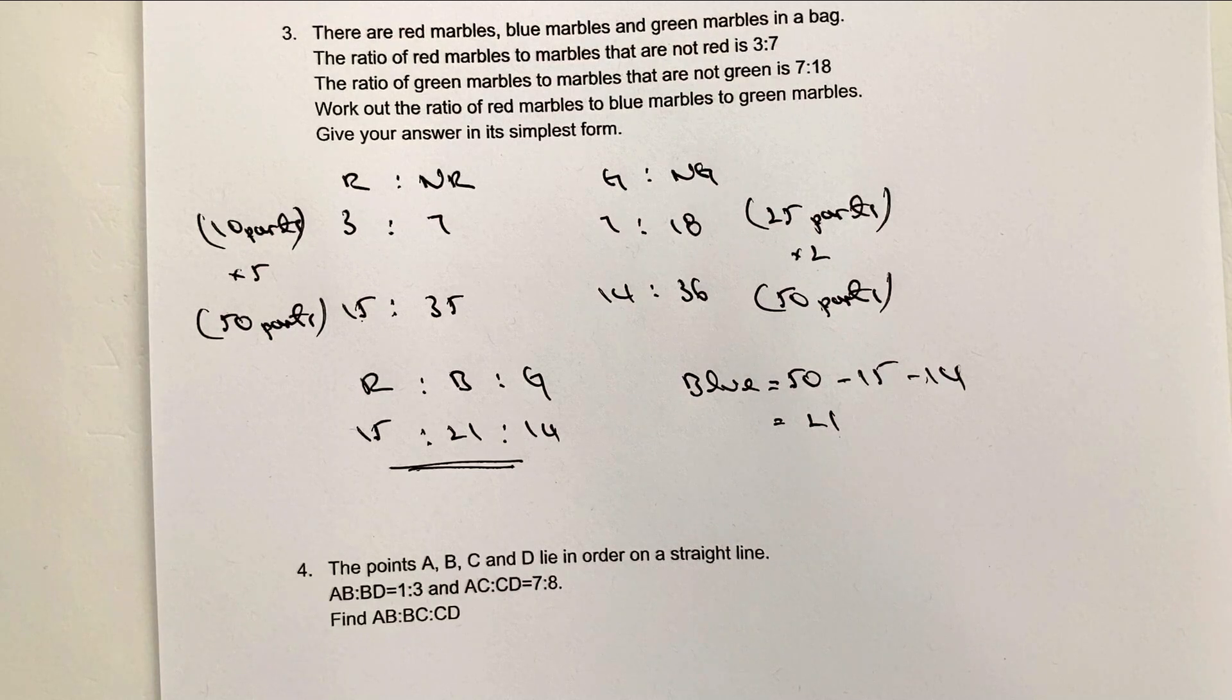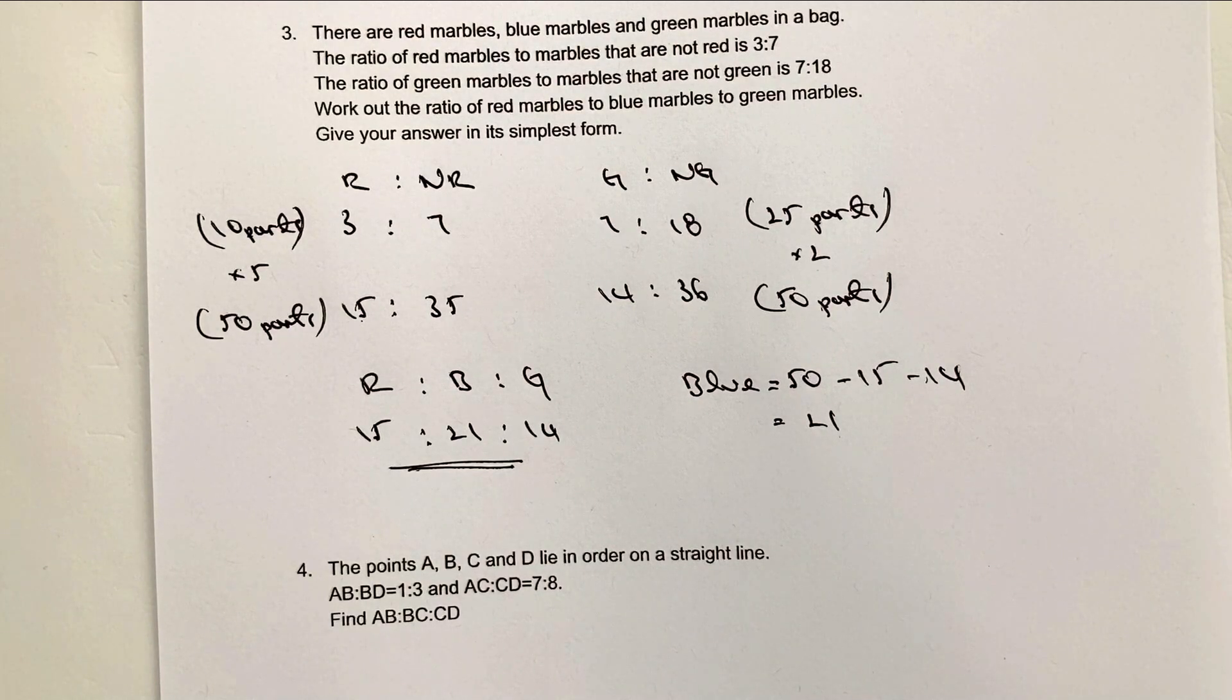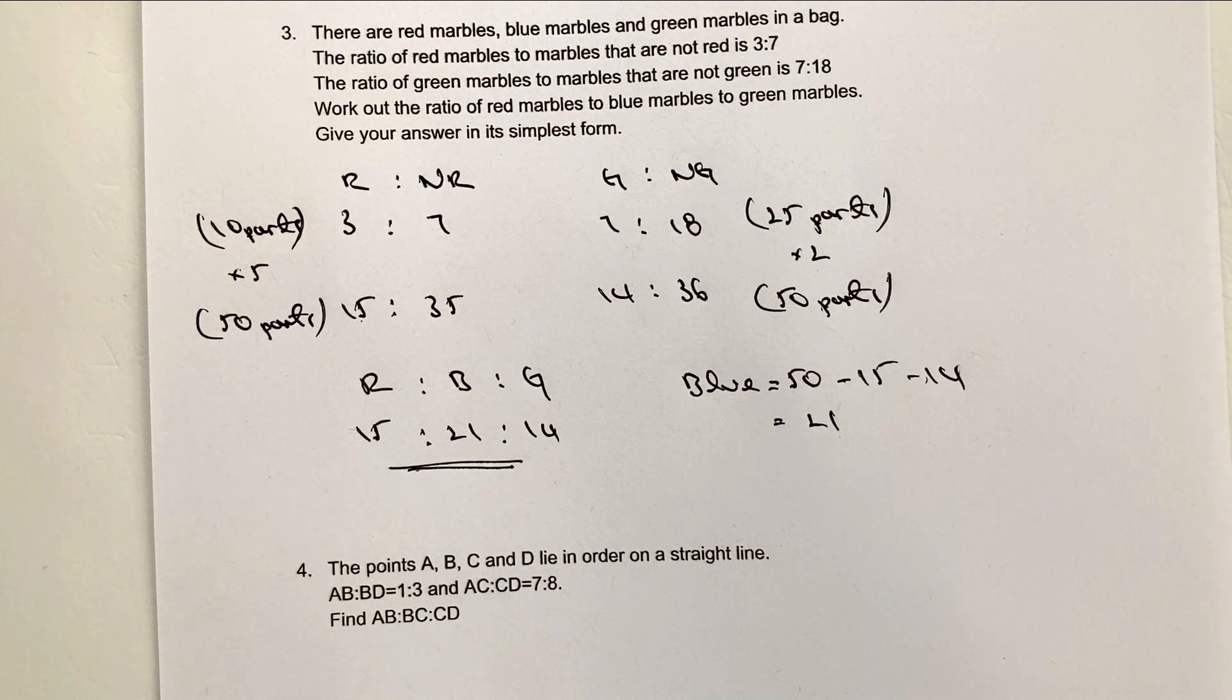Okay, now the other thing which this sometimes will do is it says give your answer in its simplest form. That is in its simplest form because there is no number that will divide into 15, 21, and 14. So just be very careful about that. That is already in its simplest form. Occasionally you get those sorts of questions.